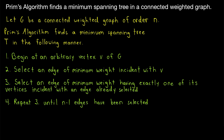Step four is to simply repeat step three, continuing to select edges of minimum weight that have exactly one vertex in common with an edge already selected. We keep doing that until n minus 1 edges have been selected. At that point we can stop, and we're guaranteed to have a minimum spanning tree.